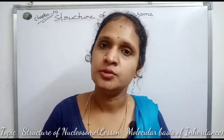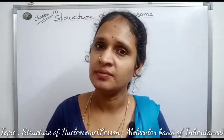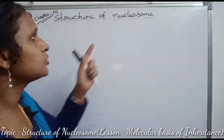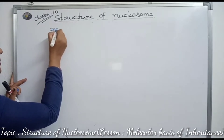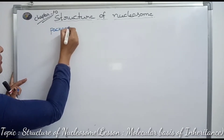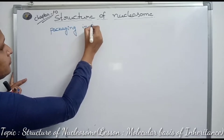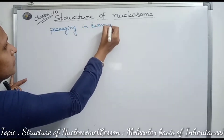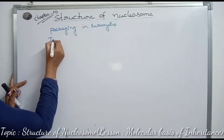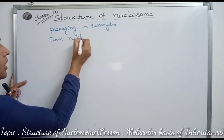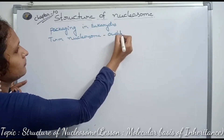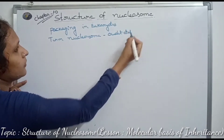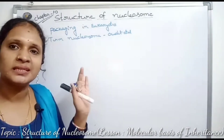Good morning. In this video we are talking about the structure of the nucleosome. It is the 10th chapter of molecular basis of inheritance. Nucleosome is the basic and structural unit of packaging in eukaryotes. The term nucleosome was given by Ardett et al. The human genome contains at least 2 meters of DNA.